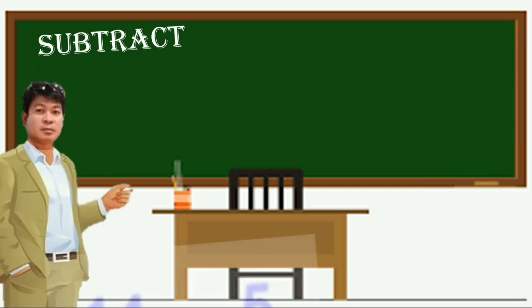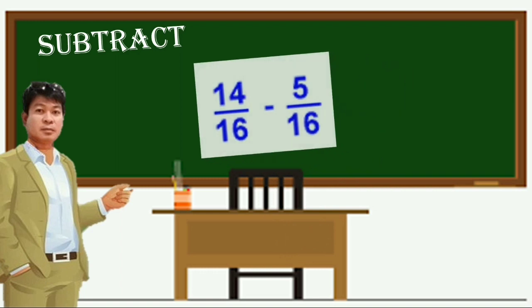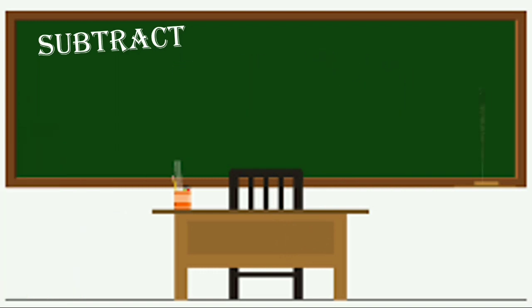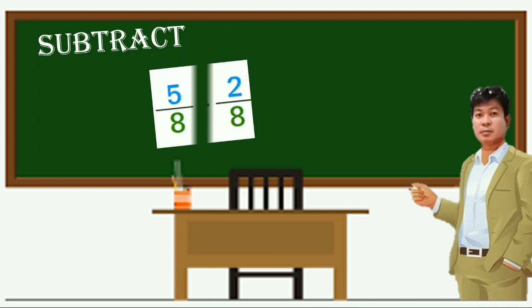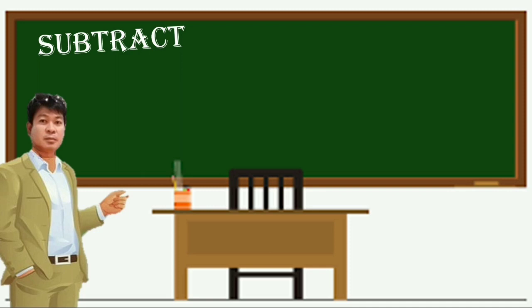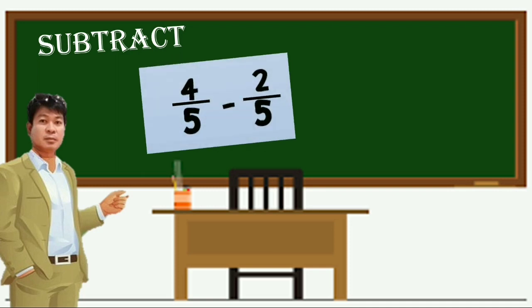Number 3, 14 over 16 minus 5 over 16. Number 4, 5/8 minus 2/8. And number 5, 4/5 minus 2/5.